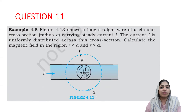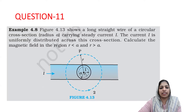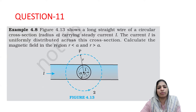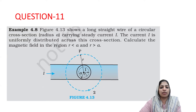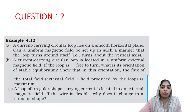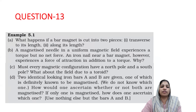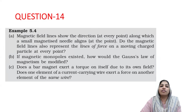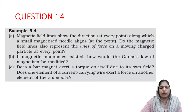Chapter 4 covers a long straight wire in a magnetic field, with a derivation question. Example 4.8 is the 11th question, and Example 4.12 is the 12th question, both from Chapter 4. In Chapter 5, Example 5.1 is the 13th question and Example 5.4 is the 14th question, involving a theory question about magnetic fields.